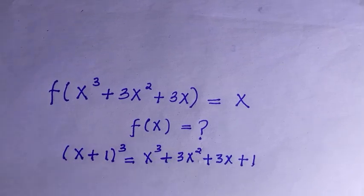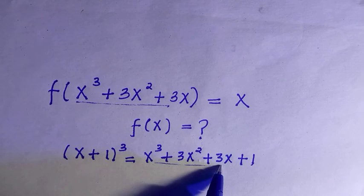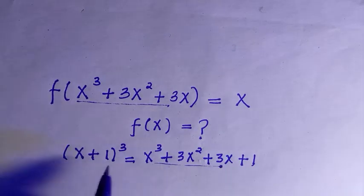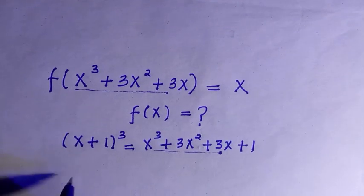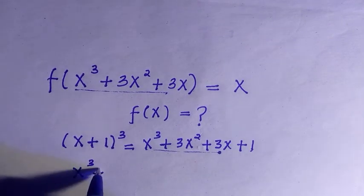We can see from this that the input of our function has been given here. What we do is transfer the +1 to the other side, and we have x³ + 3x²